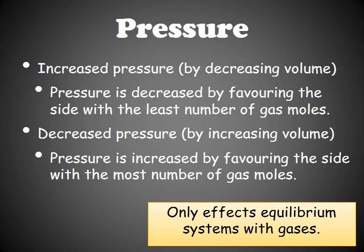In short, Le Chatelier's Principle: you're changing the position of equilibrium, equilibrium doesn't like that, so it's going to alter the ratio of reactants and products to get back to equilibrium. The three things you can essentially change are pressure, temperature, and concentration. And that's pretty much it for the reaction equilibrium lessons.